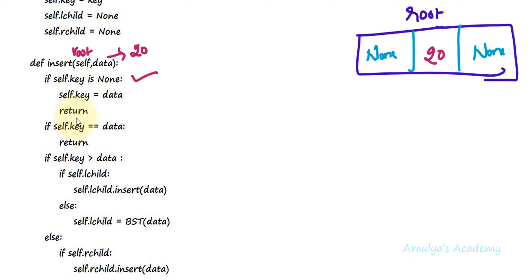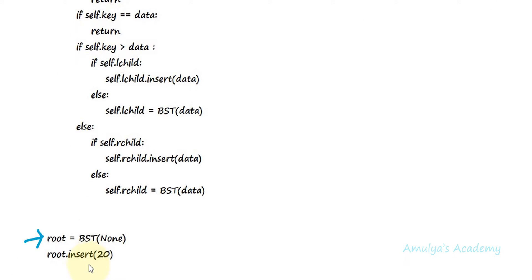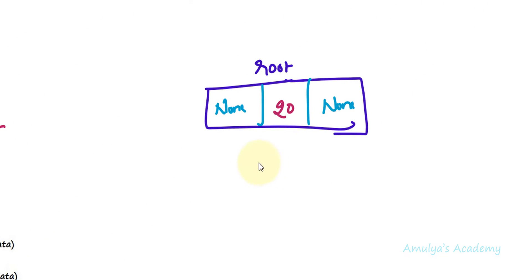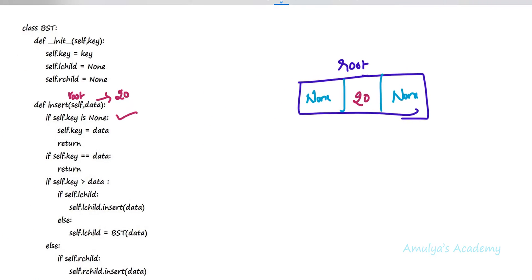After executing that it will execute the return statement, so it will come out of this method and control goes back to where it was called. We don't have any other instruction or statement to execute, so it will stop the execution of the program. We'll get a single node in the tree. This is the case if you pass the value as None while creating the object. This is one scenario, and the next scenario is what we'll look at now.